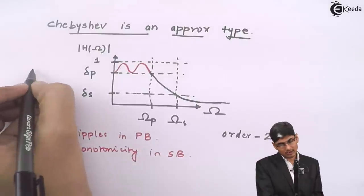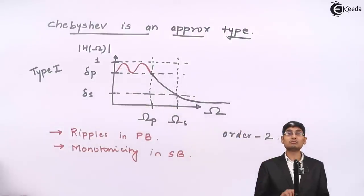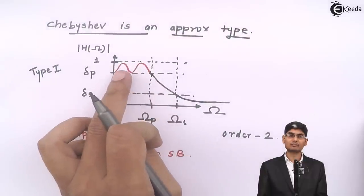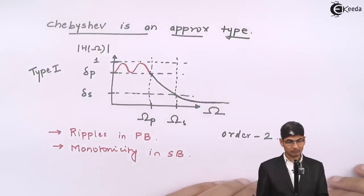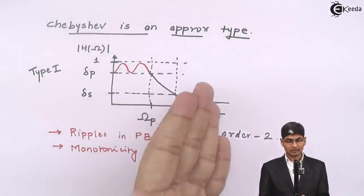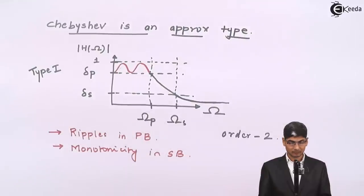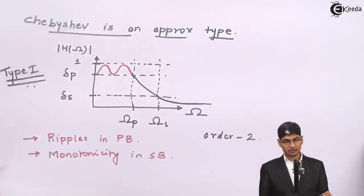This type of filter — with ripples in the passband and no ripples in the stopband — is called a Type 1 Chebyshev filter. If you reverse the position of ripples, with a flat passband and ripples in the stopband, that becomes Type 2 Chebyshev approximation. Since the stopband is where we reject signals and we are less concerned about behavior after omega_s, we will only consider Type 1 Chebyshev approximation in our design.